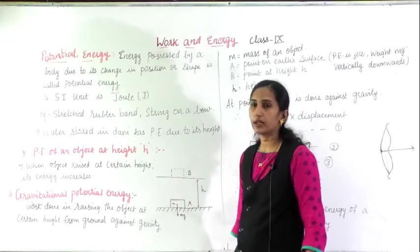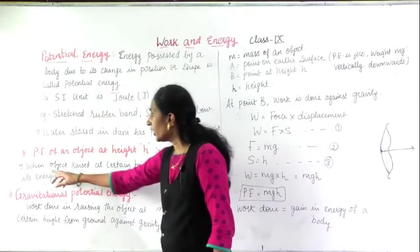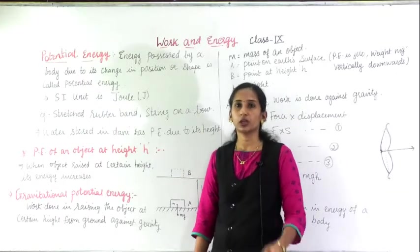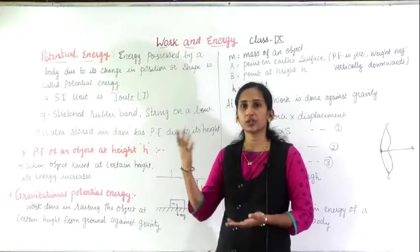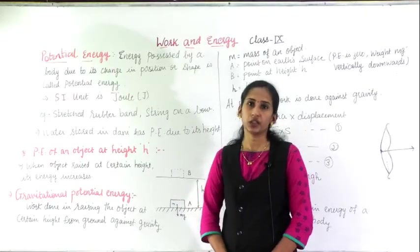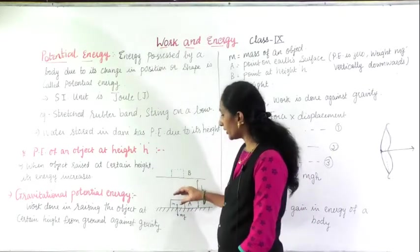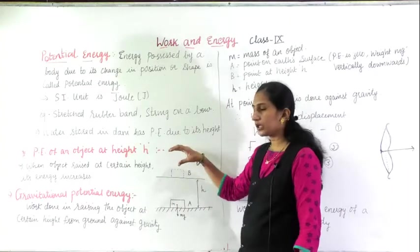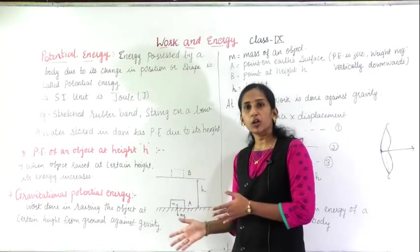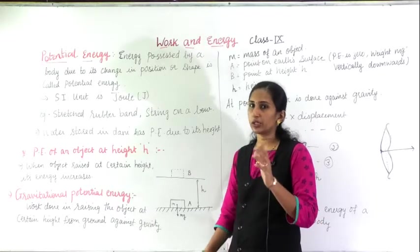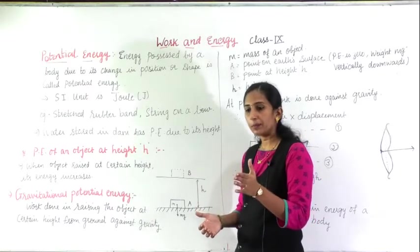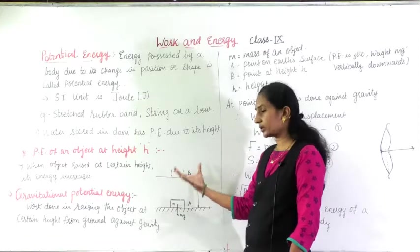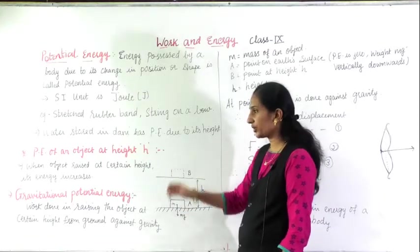Here it is at height h. When the object is raised at certain height, its energy increases. The comparison between an object lying on the ground and object kept at height — its energy increases. If the duster is lying down, it will not move, it will remain there, it doesn't have any energy. If you pick it and keep it on the table, when it falls down, it has energy — some energy is stored when you keep it on the table. If it accidentally falls down, it goes towards the ground due to the potential energy.